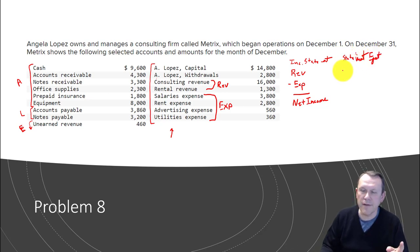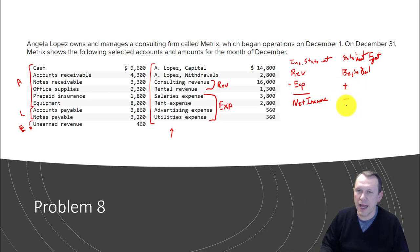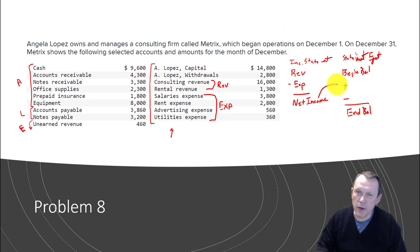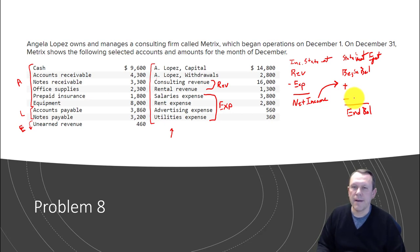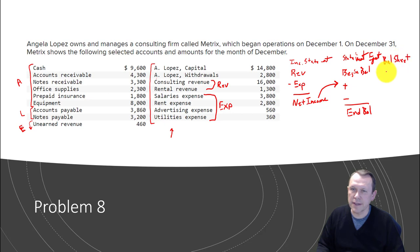The next one is the Statement of Owner's Equity. We're going to have a beginning balance for capital at the start of the month, then add some things and subtract some things to arrive at an ending balance. One of the things we add is our net income, along with any investments. The things we subtract include a net loss, if there is one, and any owner withdrawals.